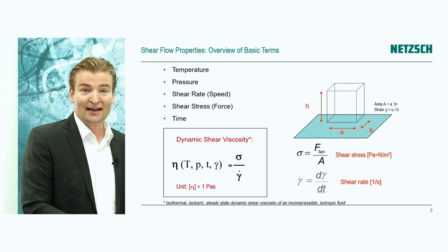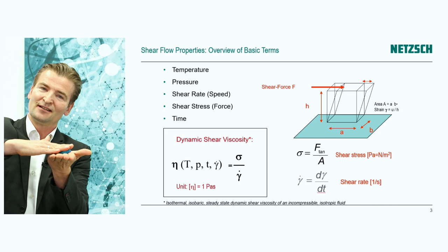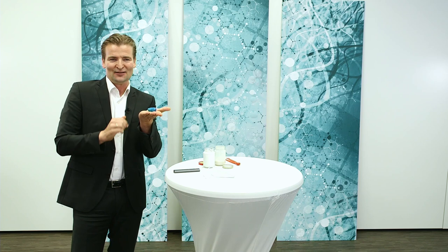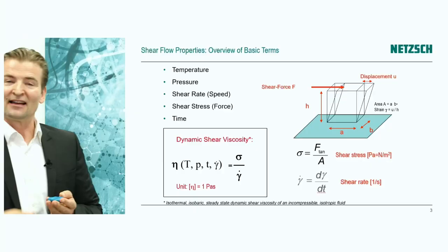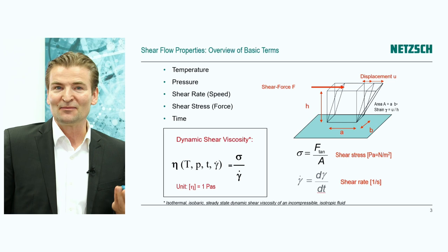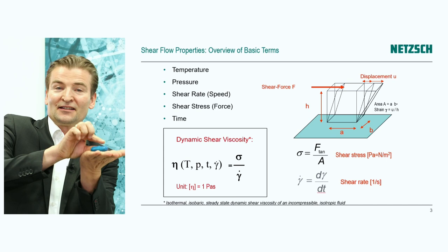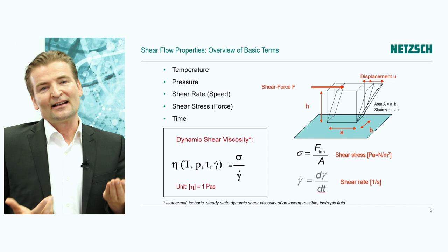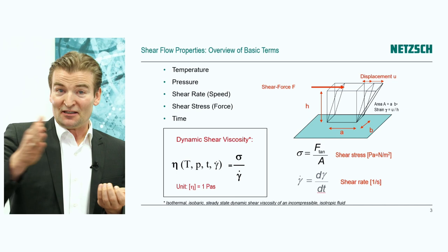Let us remind ourselves what we are doing. We apply a force to a sample — in this case, a shear force parallel to the surface. If we divide the force by the surface area, we arrive at the term shear stress, which is a normalized force. This shear stress acts on our battery slurry, and as you can see, the sample starts to flow, giving a displacement in the same direction as the applied force. By dividing the displacement by the geometry factor — the height of the slurry, the wet layer thickness — we can calculate the shear strain as a geometry-independent term.